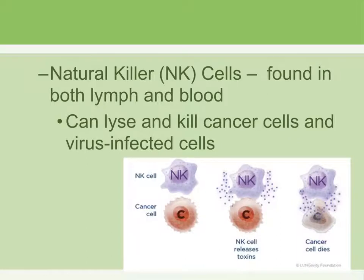Natural killer cells — named for what they do — are found in lymph and blood. In the second line of defense, there may be damage, so blood may be flowing through the area or there is leakage of fluids. These cells can lyse, meaning break apart and kill, any kind of cancer cells or cells that have been infected with a virus.